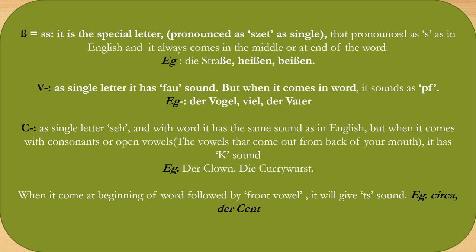Now let's talk about the letter C. As a single letter in German, it has the 'Ze' sound. When it comes in a word before consonants or open vowels — that is, vowels that come from the back of the mouth — it has a K sound. For example: Corn, Currywurst. But when it comes at the beginning of a word followed by a front vowel, it gives a Z/Ts sound. For example: zirka, Cent.